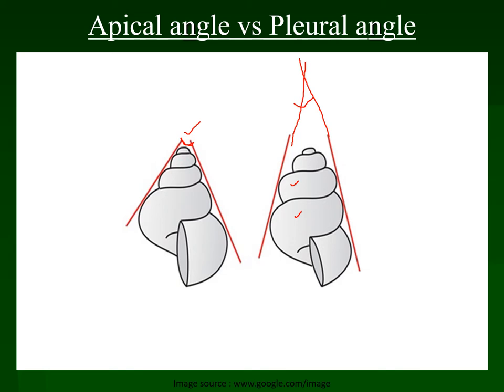The angle formed by these two tangent lines touching later-formed whorls is known as the pleural angle. In most cases, apical angle and pleural angle are the same for gastropods. But sometimes they are not the same — it varies through gastropod ontogeny. For example, in this picture apical whorls are present and the apical angle is much higher or often obtuse, but if you look at the pleural angle in lateral ontogeny, the angle becomes much smaller — it becomes acute.